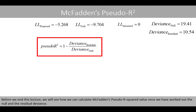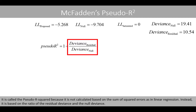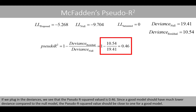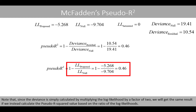Before ending this lecture, we will calculate McFadden's pseudo R-squared value using the null and residual deviance. It is called pseudo R-squared because it is not based on the sum of squared errors as in linear regression, but rather on the ratio of the residual deviance to the null deviance. Plugging in the deviances, the pseudo R-squared value is 0.46. A good model should have a much lower deviance than the null deviance, so the pseudo R-squared should be close to 1. Note that since deviance is simply log likelihood multiplied by 2, we get the same result using the ratio of log likelihoods directly.